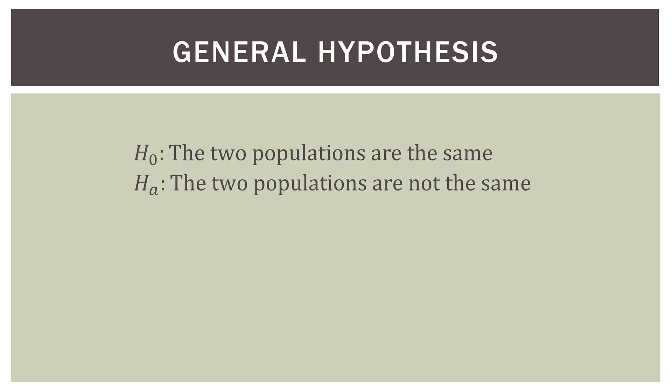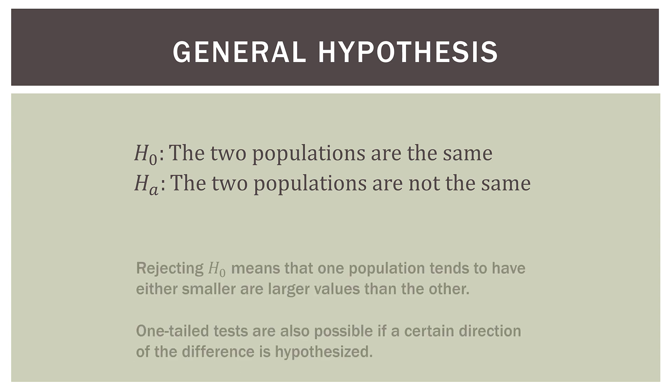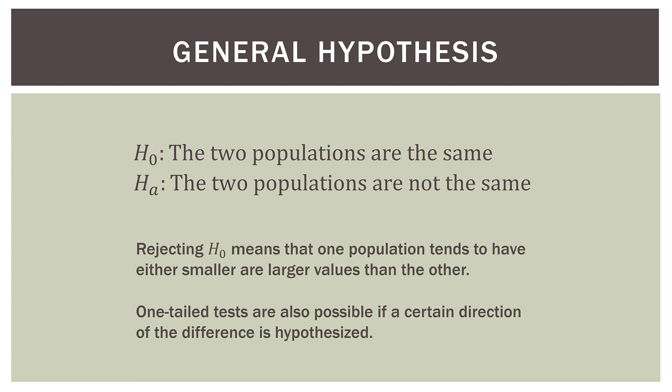Here is our general hypothesis. The null hypothesis states that the two populations are the same, or the medians are in the same location. The alternative hypothesis states that the two populations are not the same, or the locations of the medians are not the same. Rejecting our null hypothesis means that one population tends to have either smaller or larger values than the other. One-tailed tests are also possible, just like in the independent samples t-test, if a certain direction of the difference is hypothesized.